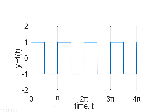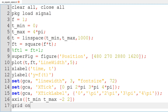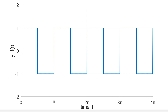The next example plot uses a frequency of 2, so I have f equal to 2 with equal spacing for the duty cycle at 50%. I simply change the frequency to 2 in line 3 and run it again. Now you can see the frequency of 2 square wave function.